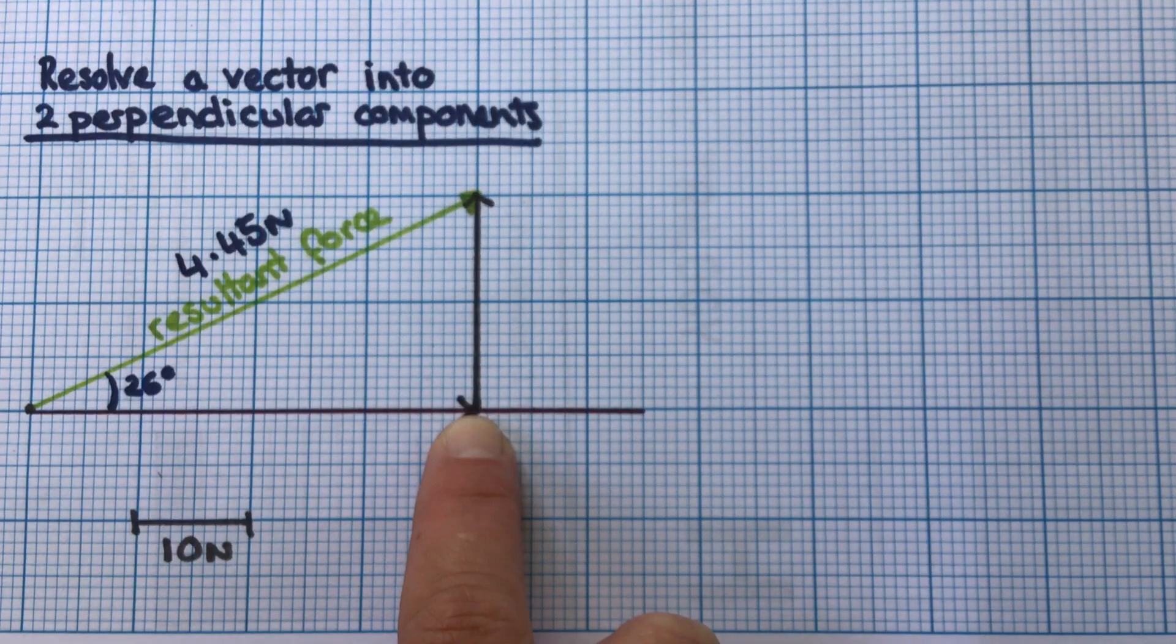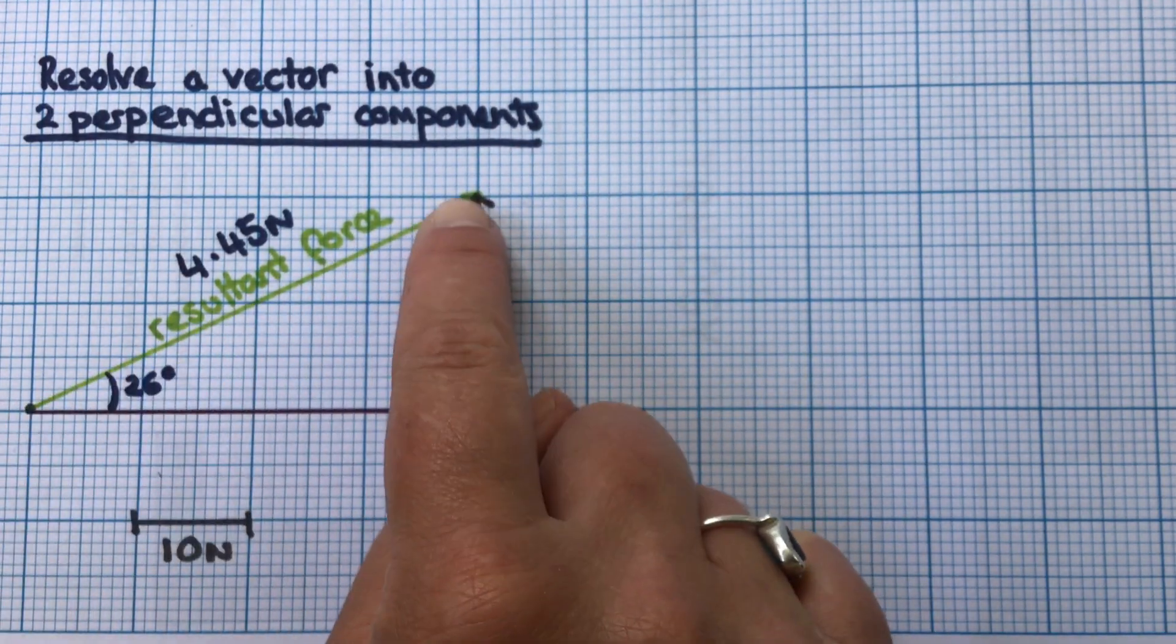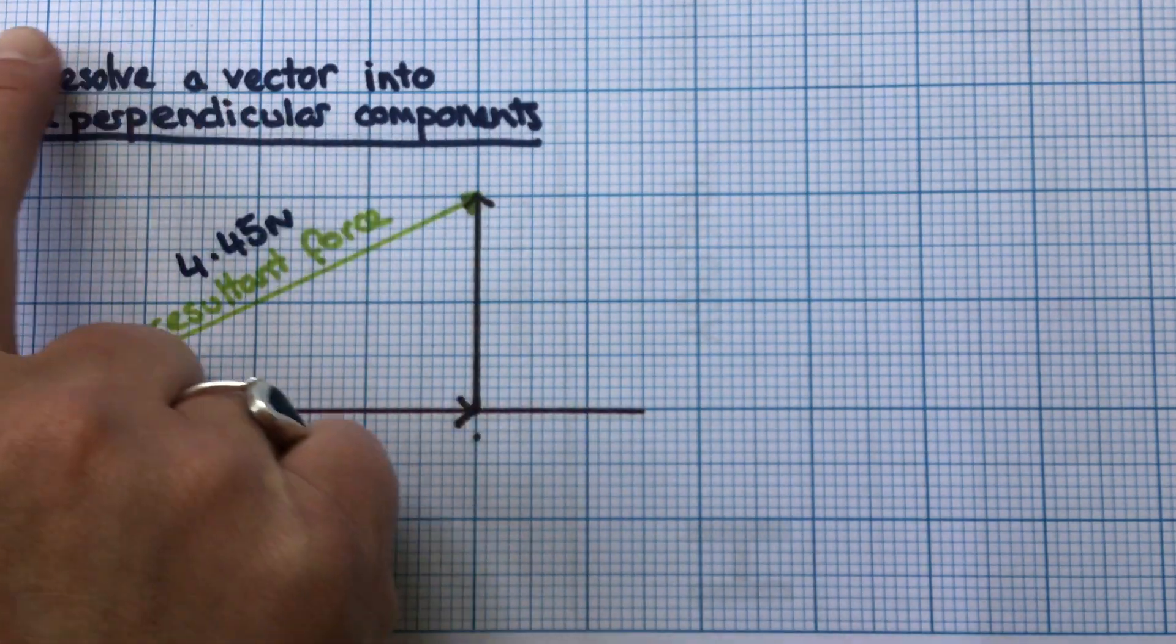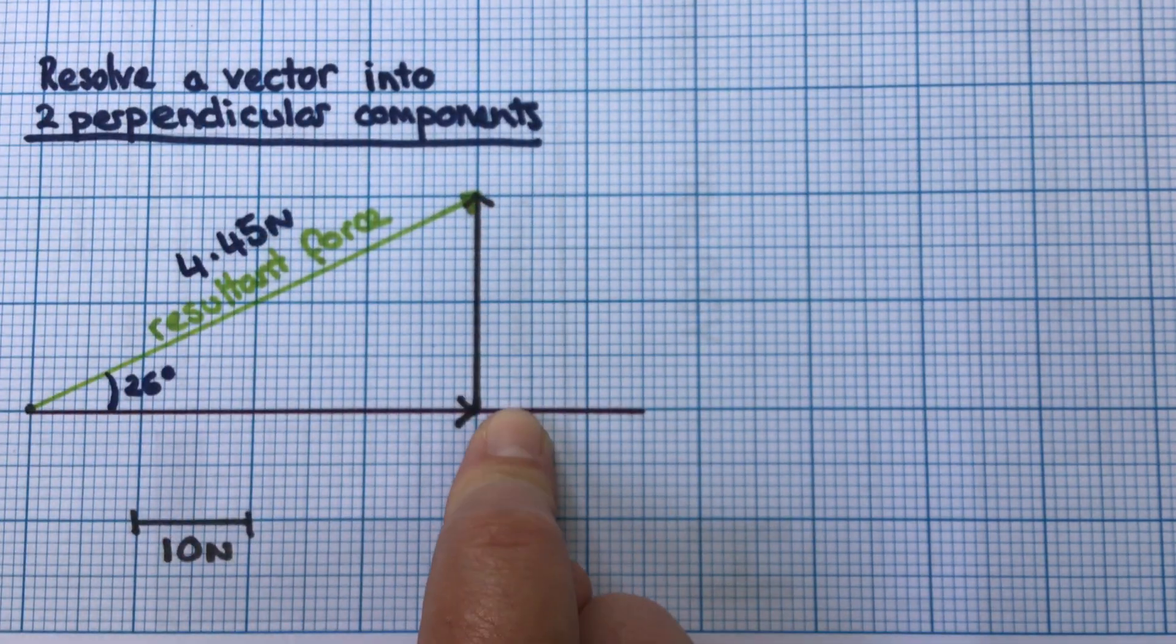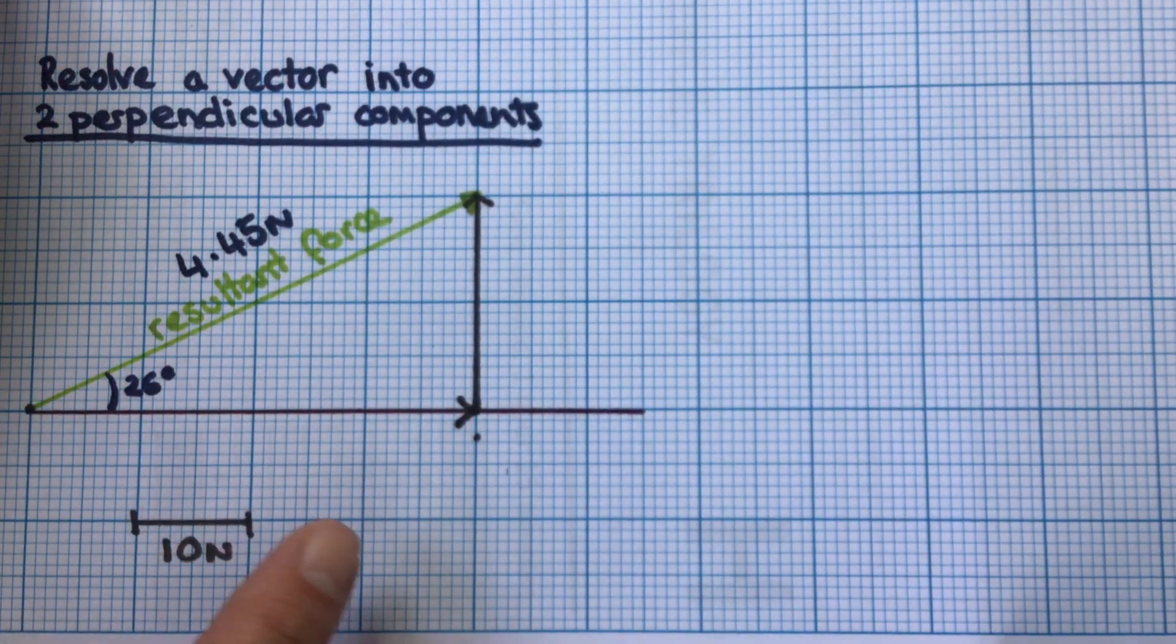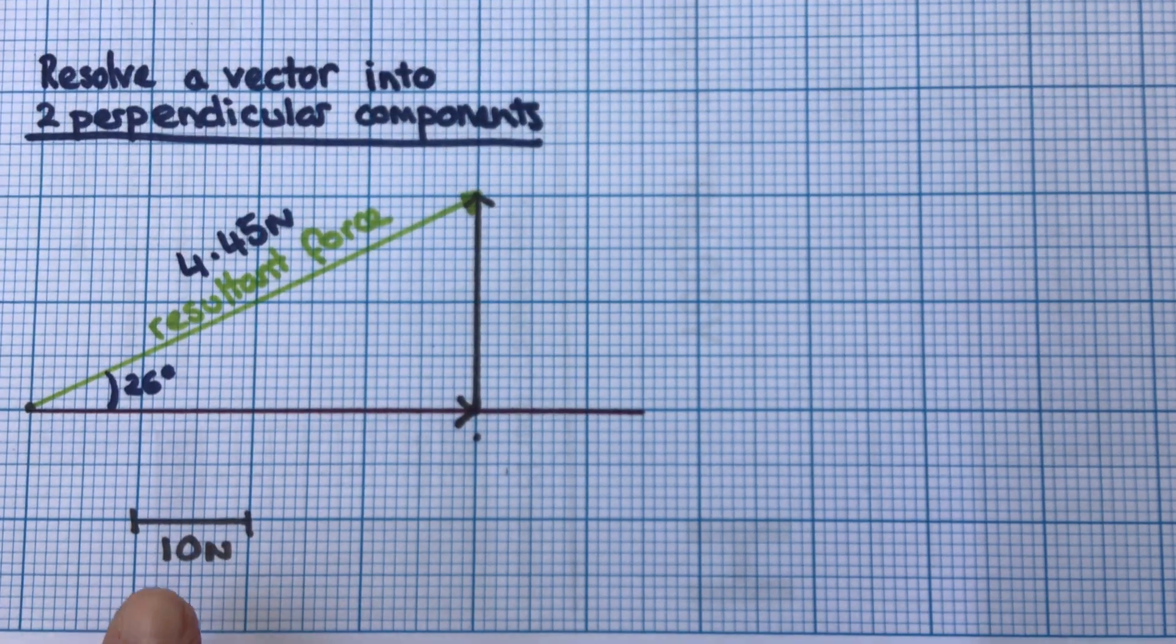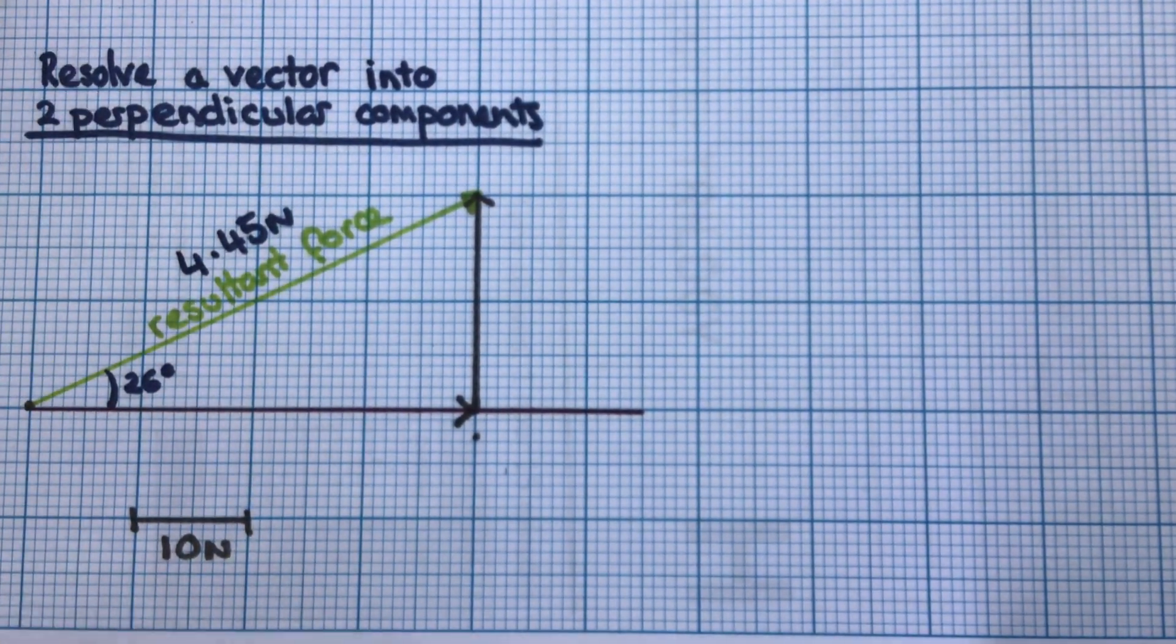If I add this component to this component, I will end up with this overall resultant vector that I started with—this is what we mean by resolving a vector into two perpendicular components. Now I need to measure the magnitude and state the direction. Our scale is two centimeters equals 10 newtons.